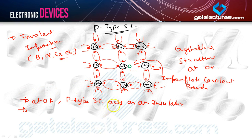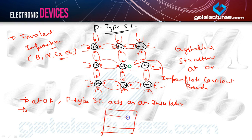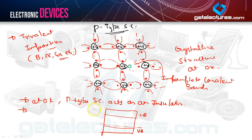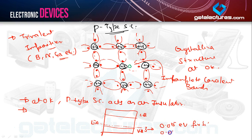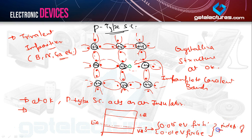Now, how does the energy band diagram of a P-type semiconductor look? This is the conduction band and this is the valence band. Since trivalent impurities are added, there exists an acceptor energy level just above the valence band, represented by Ea — analogous to Ed used for the donor energy level in the N-type semiconductor. The gap is 0.05 electron volt for silicon and 0.01 electron volt for germanium at 0 Kelvin, and this gap is also independent of temperature.